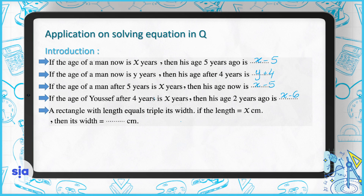Last one: a rectangle with length equal to triple its width. The length is three times the width. If the length is X, what is the width? The length is X, so the width is X divided by three.